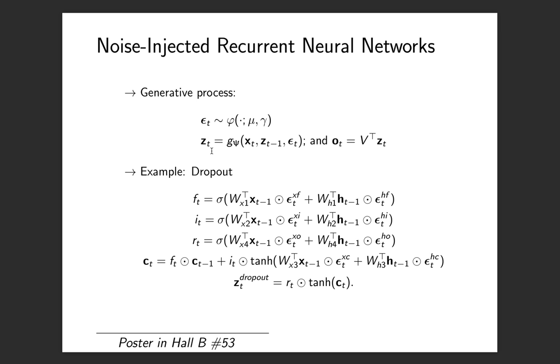This noisy hidden state can then be used to perform prediction of the next observation as usual. One very popular instance of noise injection is dropout. I'm showing here the equations of dropout used in an LSTM. The way it works is that you take your previous observation and multiply it with some Bernoulli noise, the Bernoulli mask. And then you also take your previous hidden state and multiply it with some Bernoulli mask. Then you compute the gates of your LSTM and use those gates to compute your noisy hidden state. So the noise here intervenes only at the gate level.